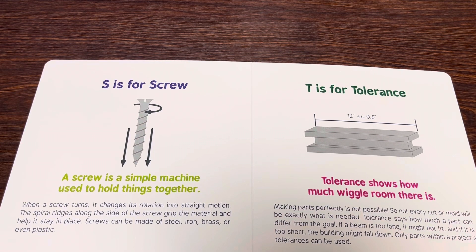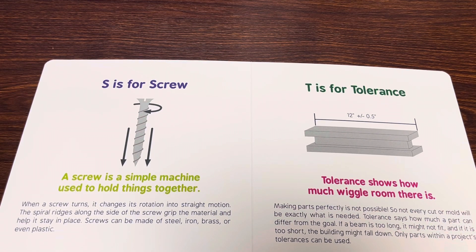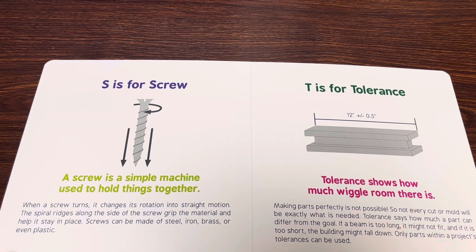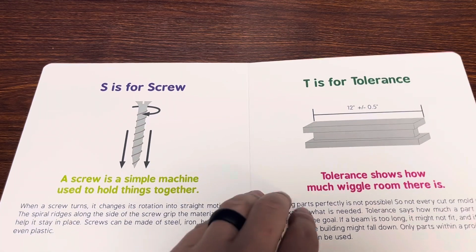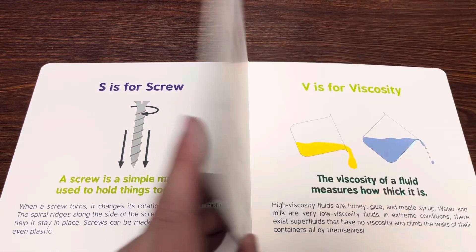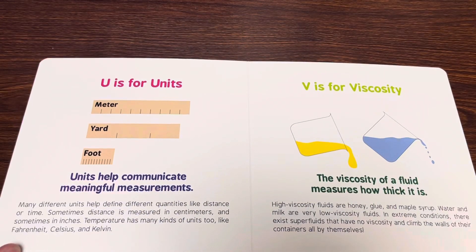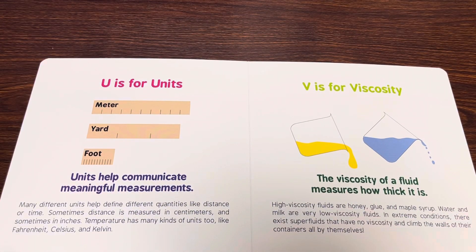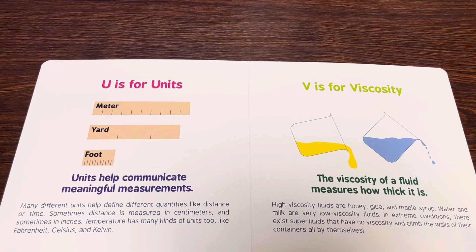T is for tolerance. Tolerance shows how much wiggle room there is. U is for units. Units help communicate meaningful measurements.